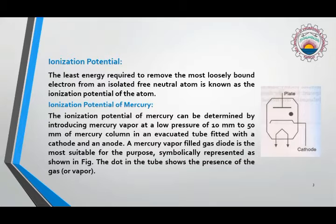Ionization potential of mercury: The ionization potential of mercury can be determined by introducing mercury vapor at a low pressure of 10 mm to 50 mm of mercury column in a tube fitted with cathode and anode. A mercury vapor filled gas is the most suitable for this purpose.